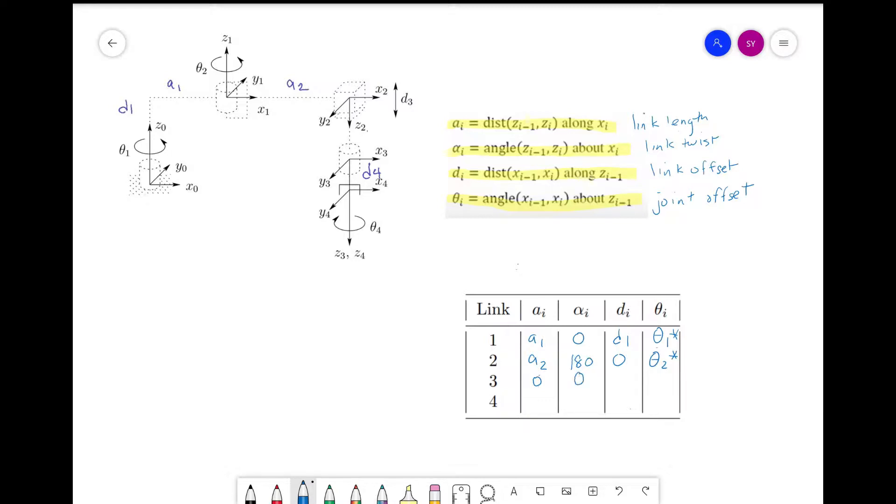For d_i, the distance from x_2 to x_3 along z_2 is d_3. This is a joint variable, so let's mark it with a star. Now for theta, we see there's no offset between x_2 and x_3. And the joint is prismatic, so we enter zero.